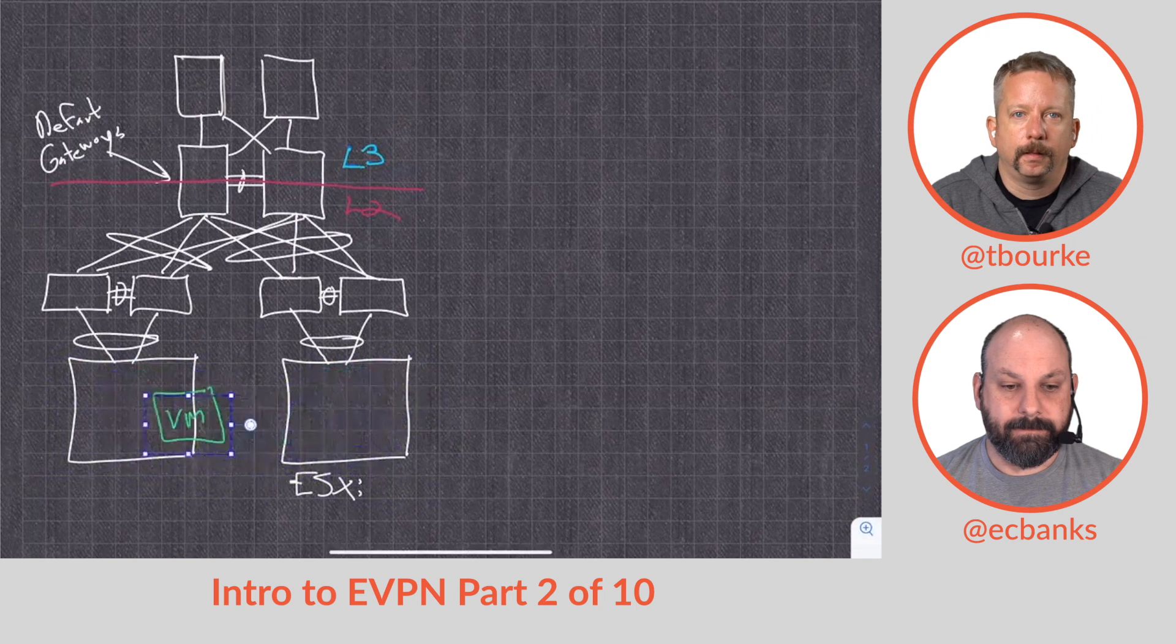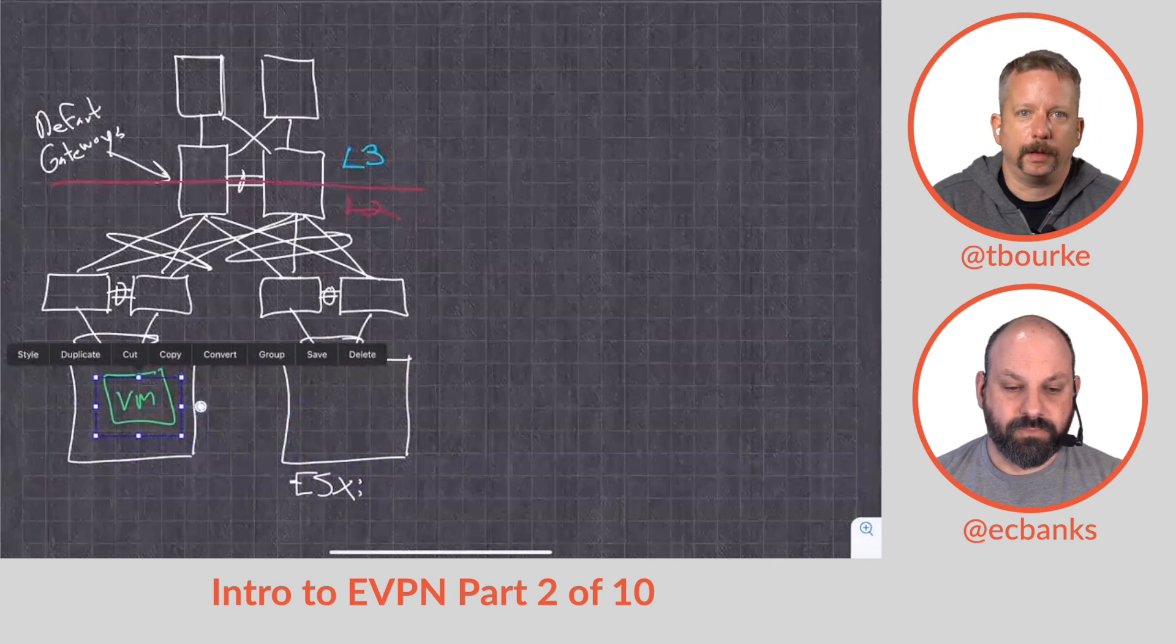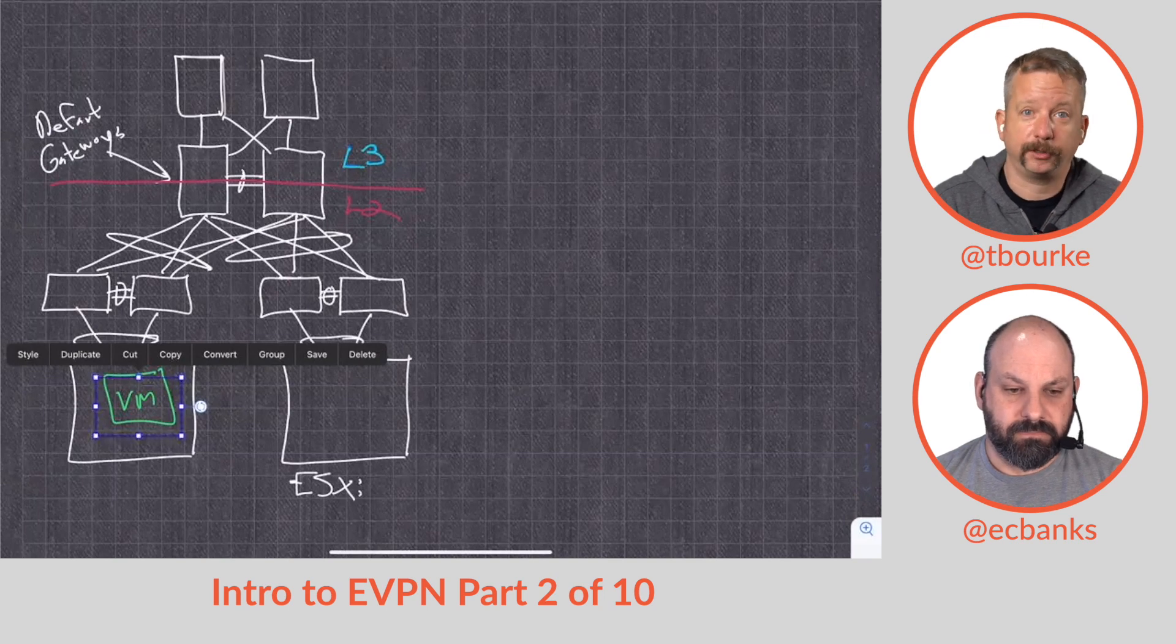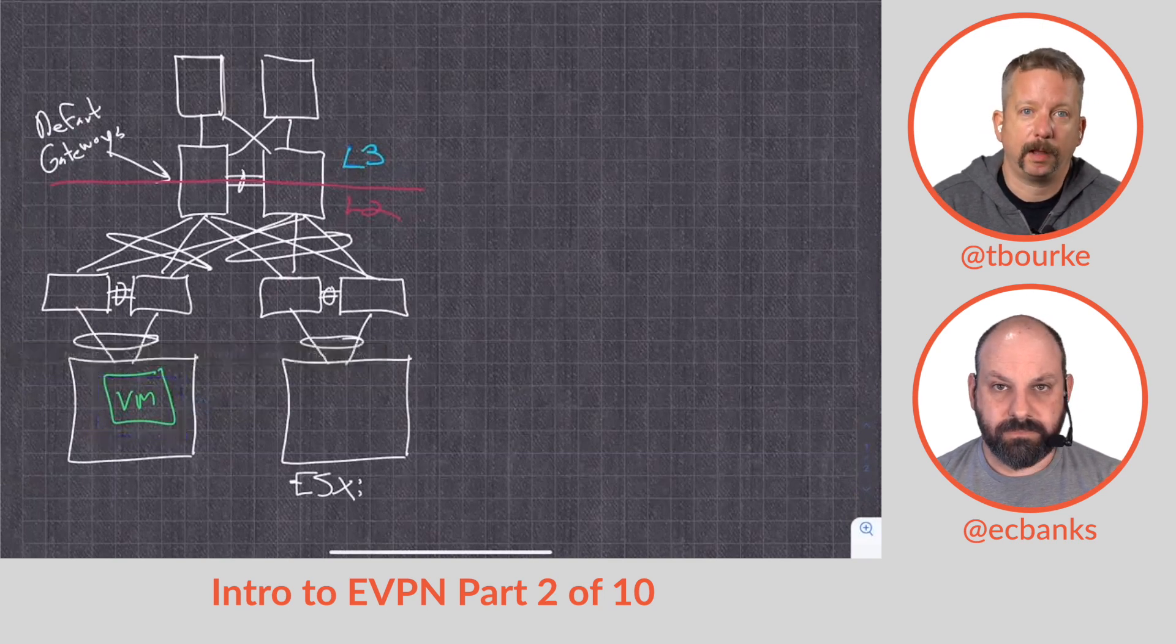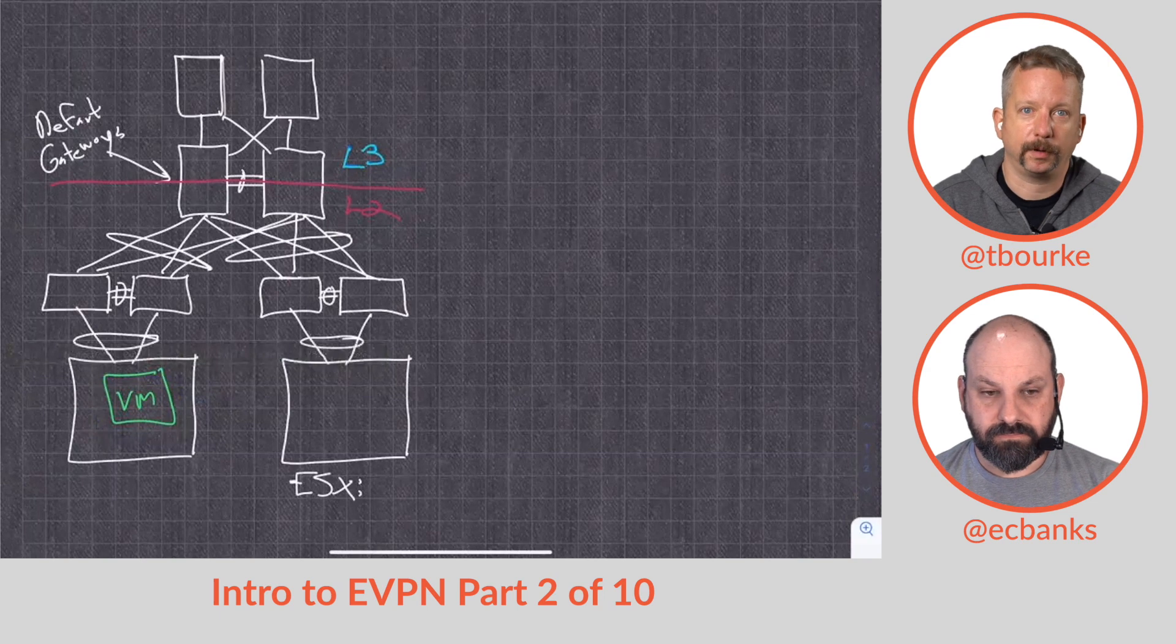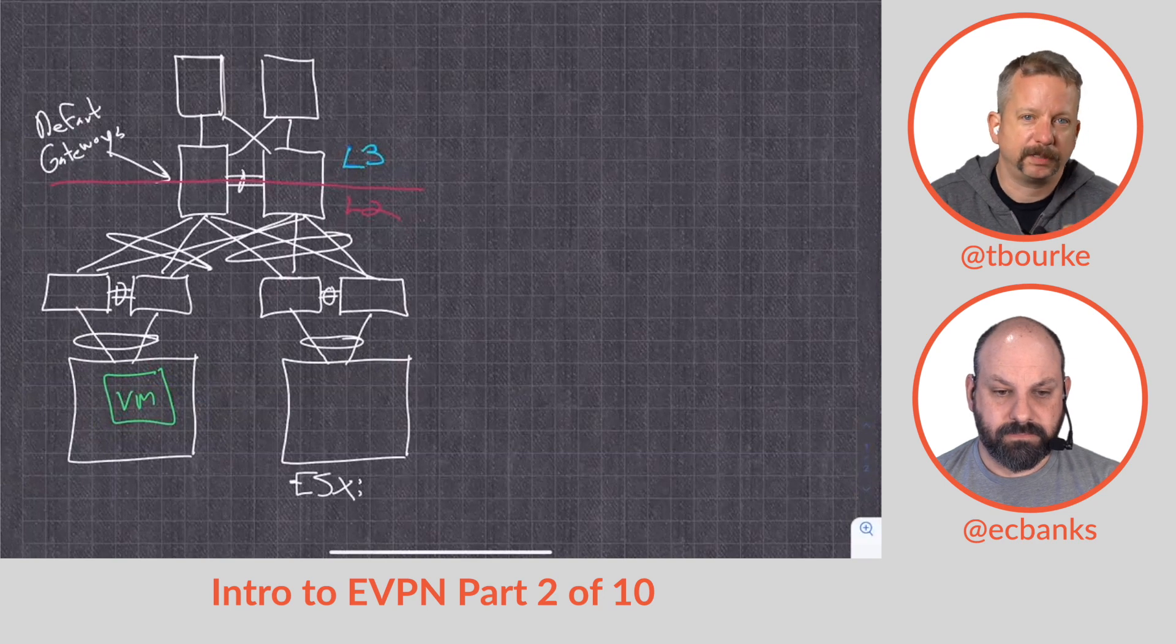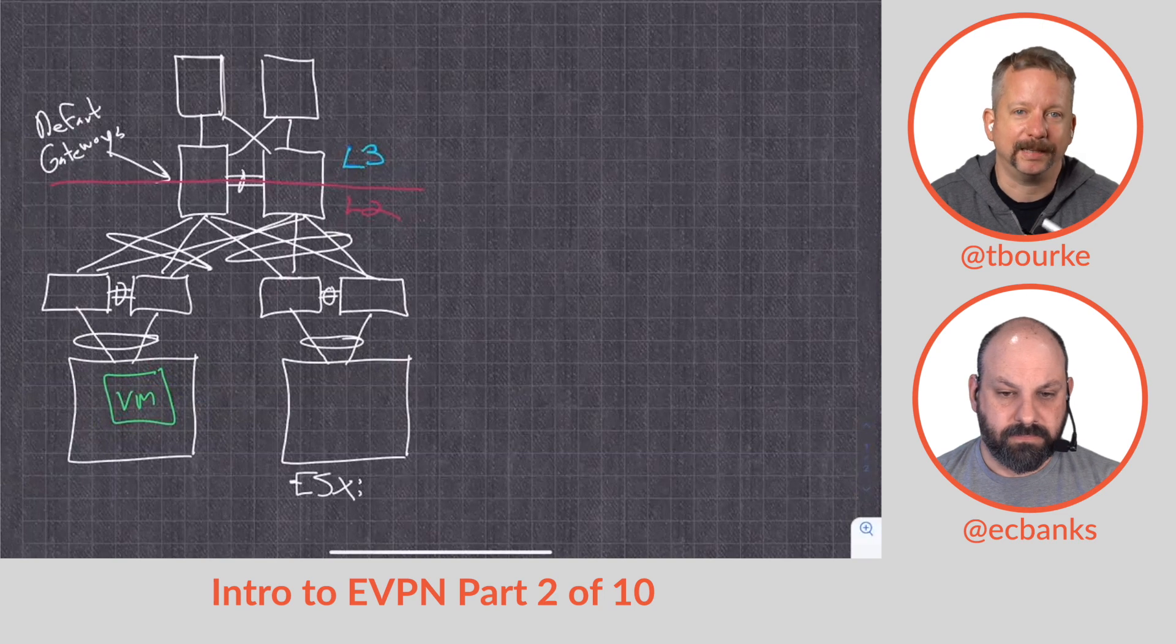As network engineers and architects and technicians, we may not like this because we would prefer just to do a simple layer 3 leaf spine, but that's not up to us. We have to support the applications that we're asked to support, and we're asked to support VMotion. One quick side note: there is a misconception that VMware has removed this layer 2 adjacency requirement. That is not the case. What they did about six years ago with vSphere 6.0 is they removed the requirement that the VM kernel interfaces...